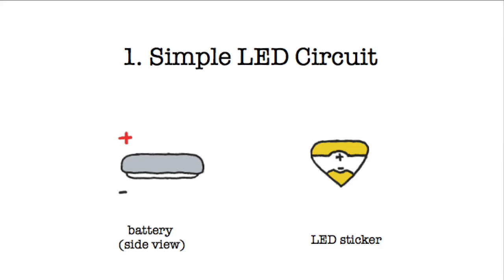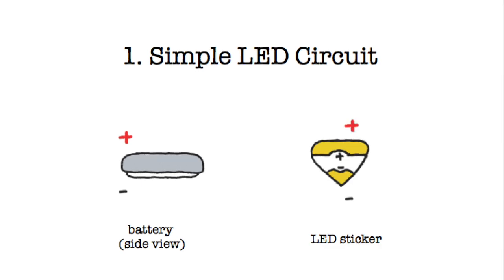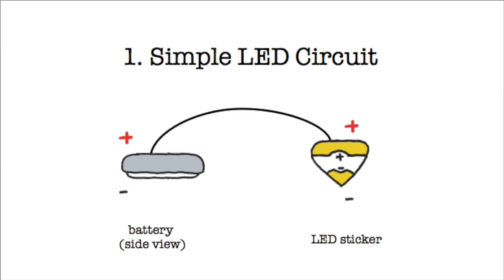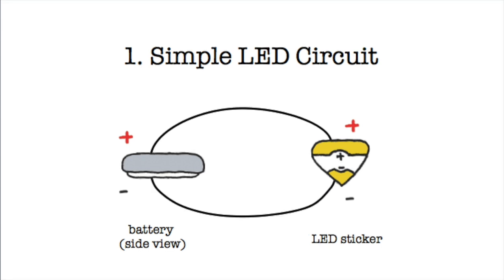Then you have your LED sticker, which also has a plus side, the wide end, and a minus side, the pointy end. Finally, you have your connector, such as wire or conductive foil tape, which connects the plus side of the battery to the plus side of the LED, and the minus side of the battery to the minus side of the LED.